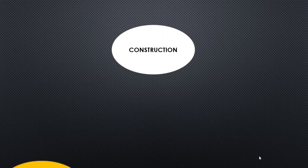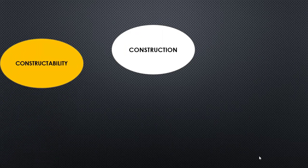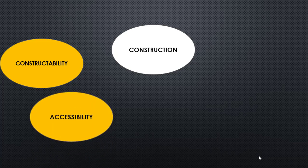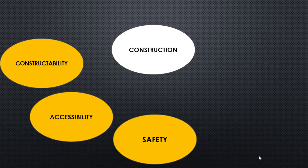The next topic is construction. The first thing you must know is about constructability — how a piping will be constructed, installed, and erected. At least we must know the basic knowledge about construction. The second thing is accessibility of valves, instruments, and equipment installed along with the piping system. If we don't provide accessibility, it will be hard for an operator to operate the plant. The third is safety — we should consider the safety of the workforce that are going to install the entire system.